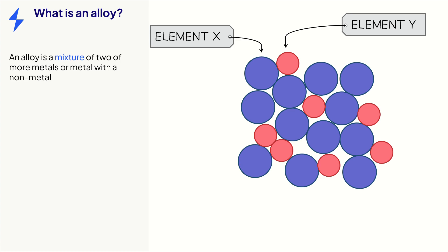Here, element X represents the metal and element Y is the other element. Examples include steel, which contains iron and carbon, bronze, which contains copper and tin, and brass, which contains copper and zinc.